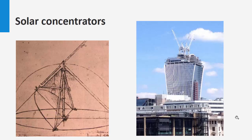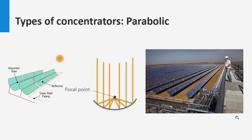The first system we will discuss is parabolic trough collectors. A parabolic trough consists of a linear parabolic reflector that concentrates light onto an absorber tube located in the middle of the parabolic mirror, in which the working fluid is located. The fluid is heated to 150 to 350 degrees Celsius and then used in a heat engine.